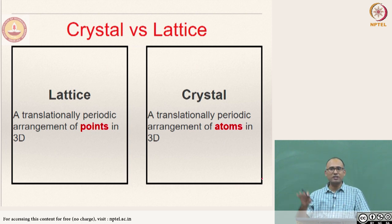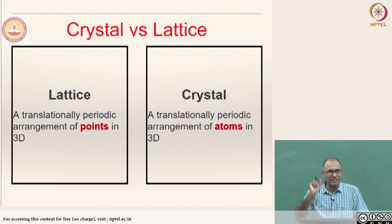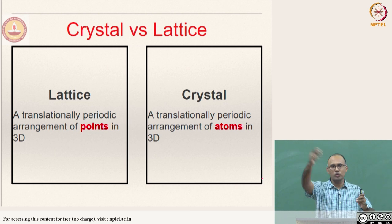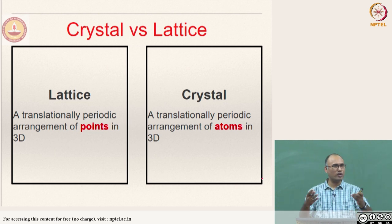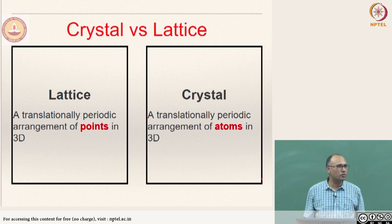When we looked at the Cambridge wall example, we identified bricks that look identical in the two-dimensional space, identified those points, and removed the brick wall. The set of points is what we call a lattice — basically a translationally periodic arrangement of points in 3D in general. If you are defining a 2D lattice it is in 2D; if 1D, then in 1D.